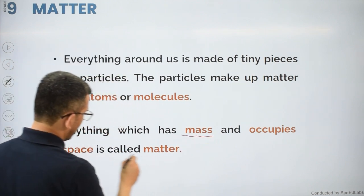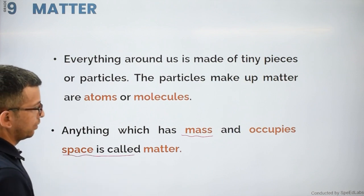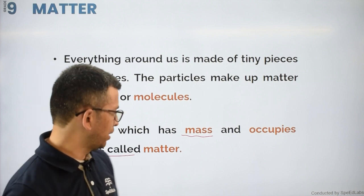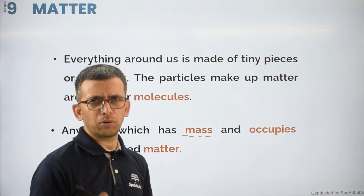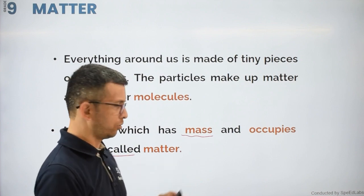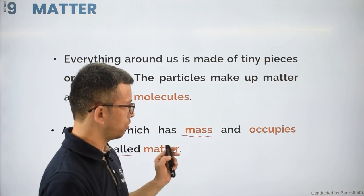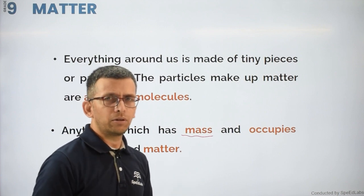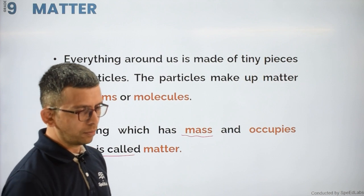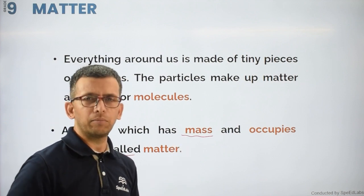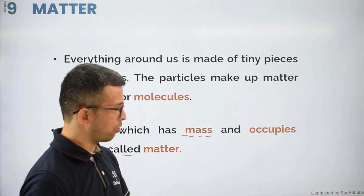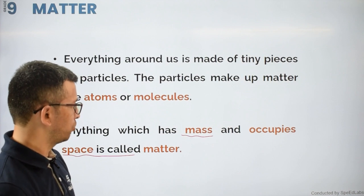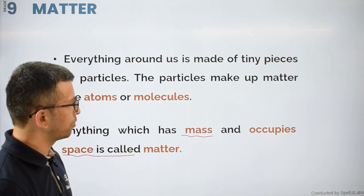For example, a pen has some mass and it occupies some space when kept on a table. Even human beings are matter — we have mass and weight, and when standing on the floor we occupy some space. So everything is matter.